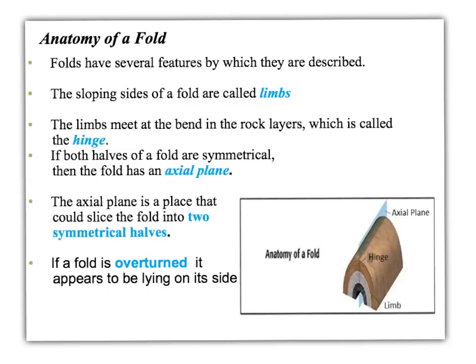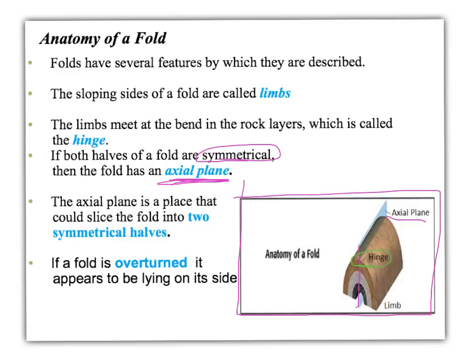When we look at a fold, there are different parts, and you can see in the picture what those different parts are. There's an axial plane, which cuts right down the middle of the fold and breaks it into two symmetrical halves. That means one side of the plane is a mirror image of the other side. That plane runs right through the center of the fold, which is the turning point known as the hinge.